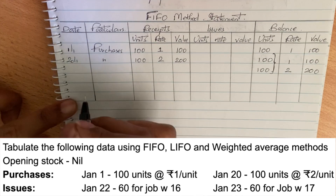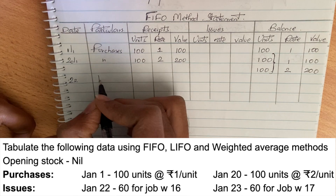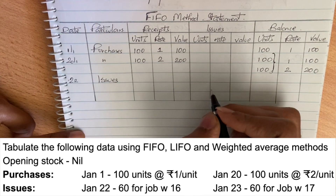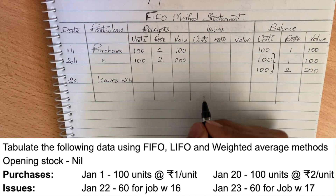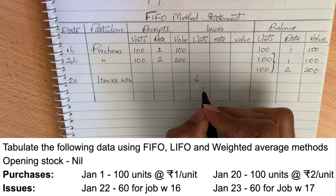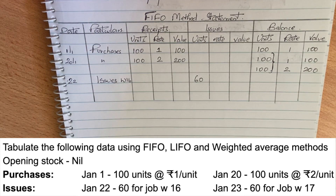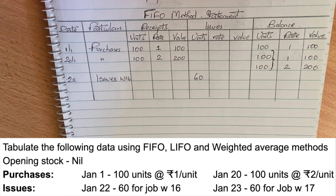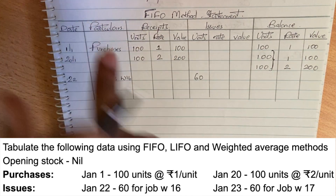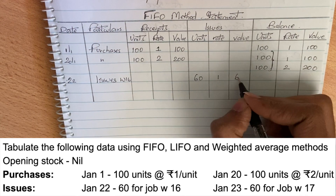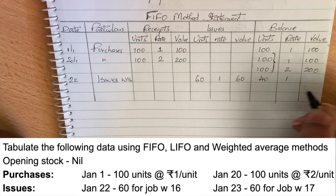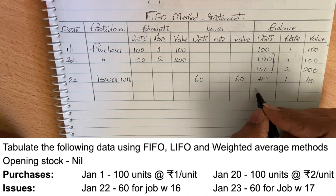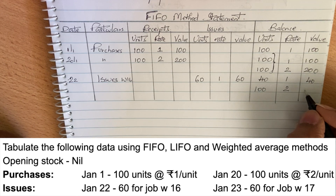Next, on the 22nd of January, an issue is made for job work 16. Issues are 60 units. In the first-in-first-out method, the first lot purchased is issued first. The first lot was at the rate of 1, so 60 units at rate 1 = 60. The balance from that lot: 100 minus 60 = 40 units at 1, value 40. The second lot of 100 units at 2 remains, value 200.